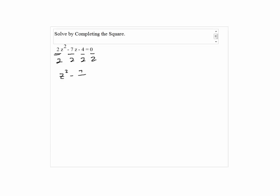So z squared minus 7 halves z minus 2 equals 0. Now we move the constant term to the right hand side so we have z squared minus 7 halves z equals 2.